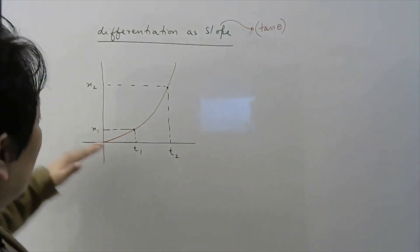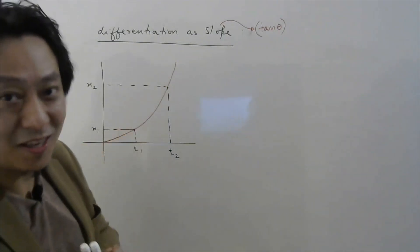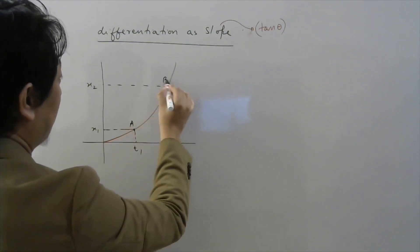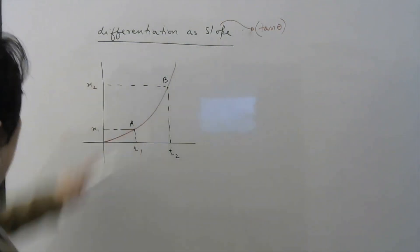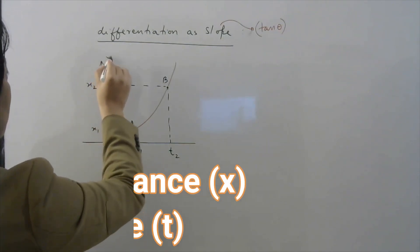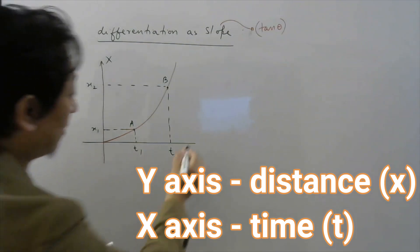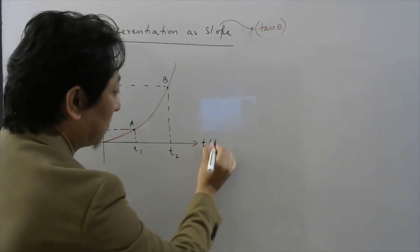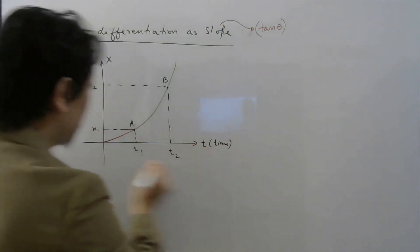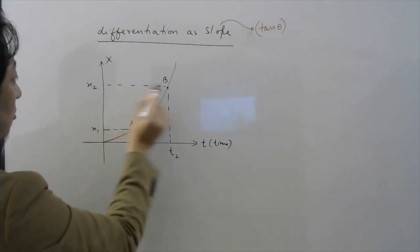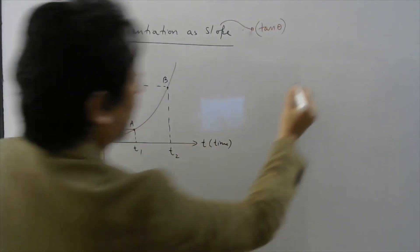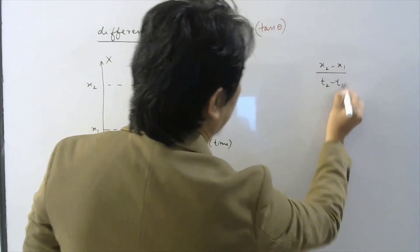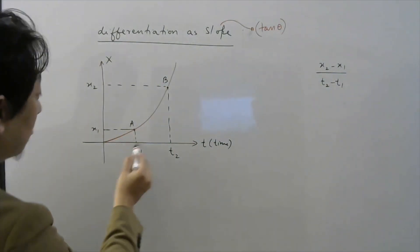Keeping that in mind, let us look at the same graph we have been discussing. I have chosen two points — let us call them A and B. The y-axis represents distance covered, which I am writing as x, and the x-axis is being used for time. The coordinates of these points are x1, t1 and x2, t2. The average rate of change is x2 minus x1 divided by t2 minus t1 — this is your average rate of change between t1 and t2.